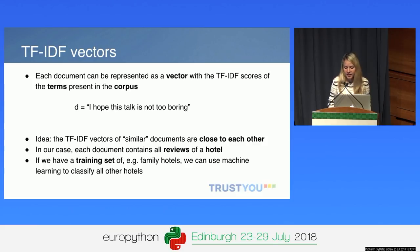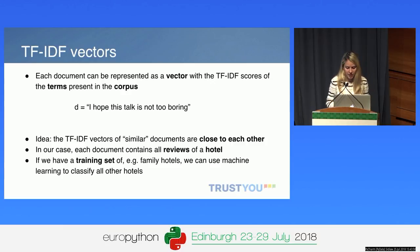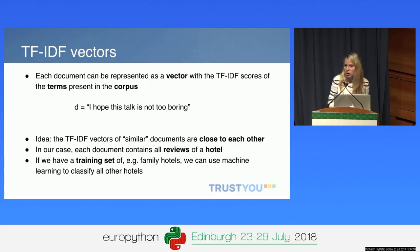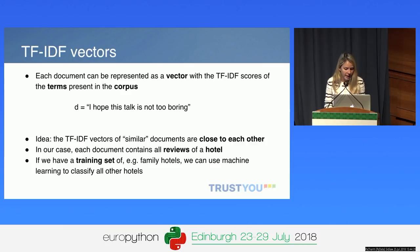The idea behind this is that TF-IDF vectors of similar documents will also be similar to each other. For example, if you have a corpus of recipes of different foods and you compute TF-IDF scores for two chocolate cake recipes, their TF-IDF vectors will be close to each other because words such as chocolate, butter, and other ingredients will have very high TF-IDF scores for both recipes. In our case, each document is the set of all reviews for a certain hotel.